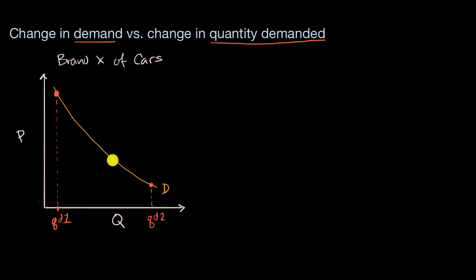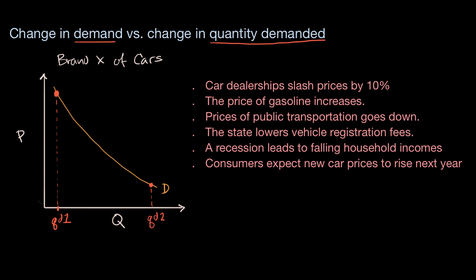With that out of the way, to make things more tangible, let's go through a bunch of different circumstances and think about whether they would result in a change in demand versus a change in quantity demanded. In this first scenario, car dealerships slash prices by 10%. Would that result in a change in demand — shifting our demand curve — or would it involve a shift along the curve, a change in quantity demanded?